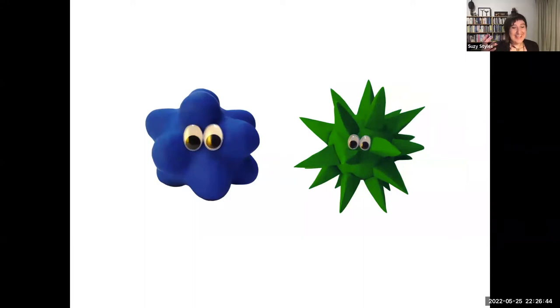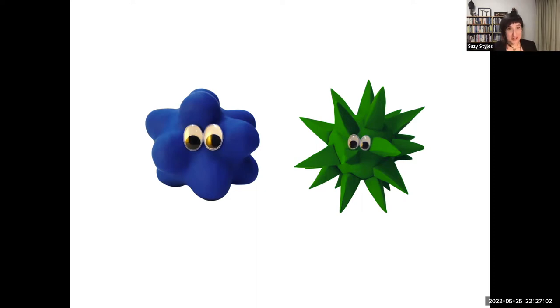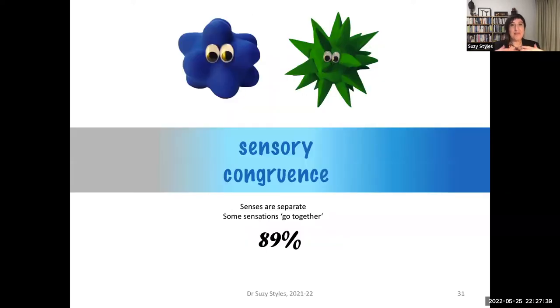Another example of sensory differences is how we connect information across the senses. I have on the screen two characters and I'm going to introduce two different names. Each of you can make your own decision on which name you think goes best with which character — the names are Vono and Shiki. If you'd like to add your response, it's activity number three on the QR code. In past studies of this kind, we get agreement rates of around 89% — almost 90% of people make the same choice about which name goes with which character.